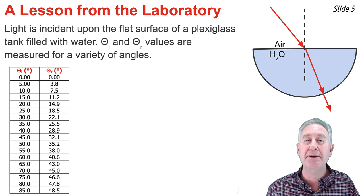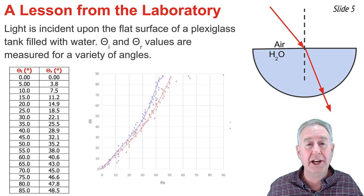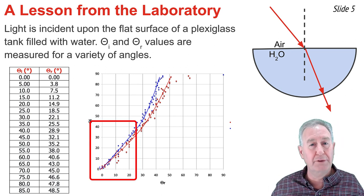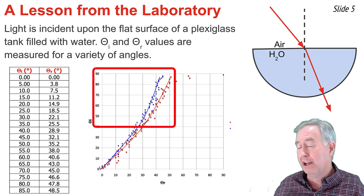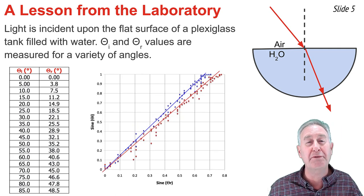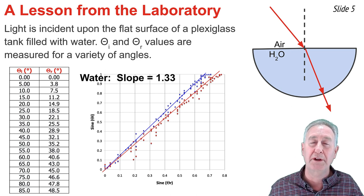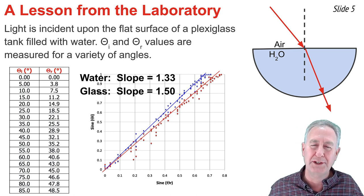The experiment is then repeated using a hemicylindrical disk of lucite glass instead of water. If the data for both experiments is plotted as the angle of incidence versus the angle of refraction, the line is relatively straight for smaller angles but curves for larger angles. However, if the sine of the angle of incidence versus the sine of the angle of refraction is plotted, we get straight lines. The slope is about 1.33 for the air-to-water boundary and about 1.50 for the air-to-glass boundary, with a y-intercept of zero in both cases.